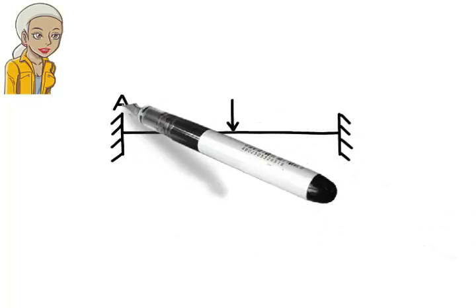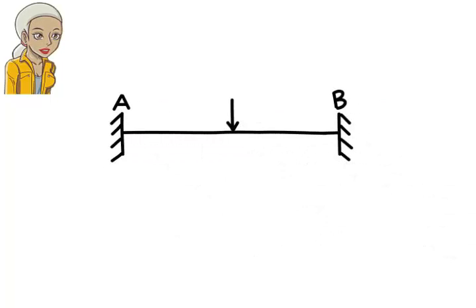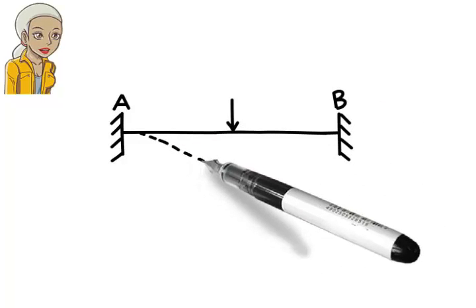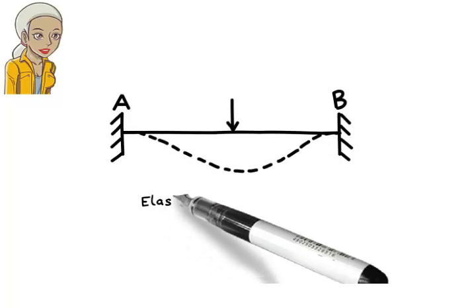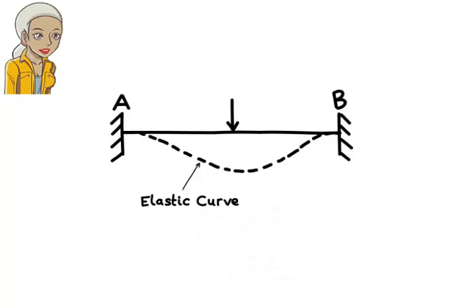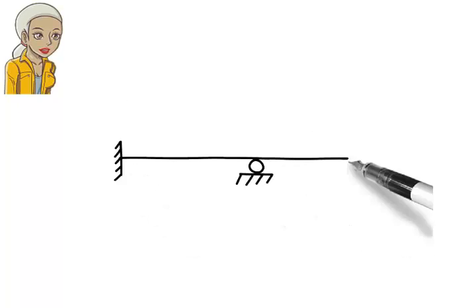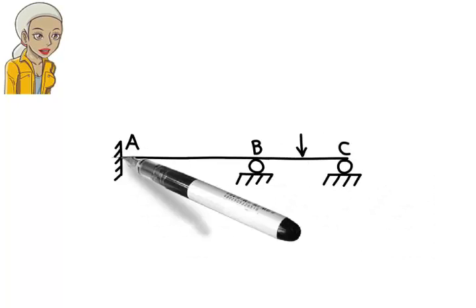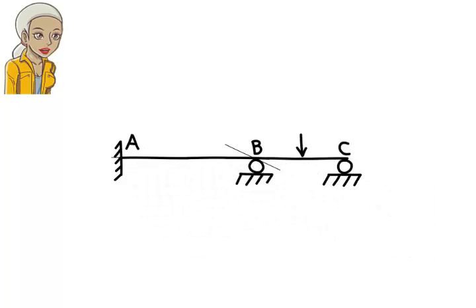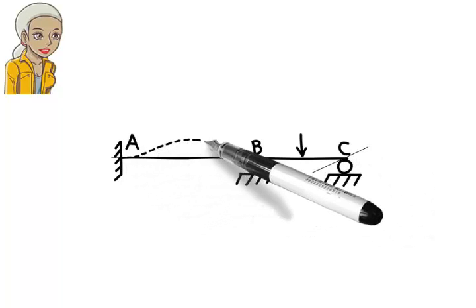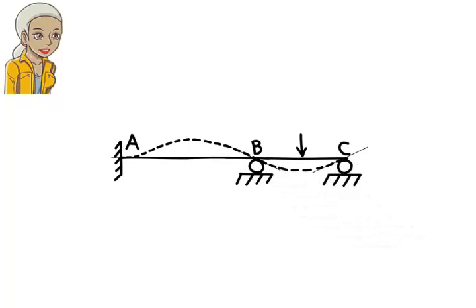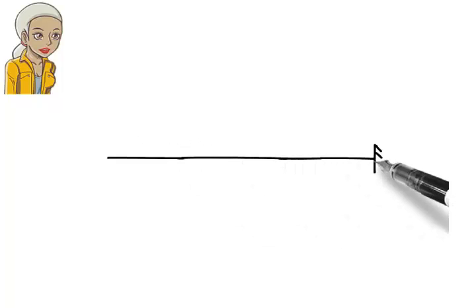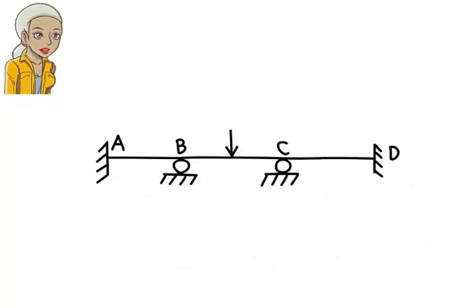This beam deflects downward, but the deflection curve — also called the elastic curve — has a zero slope at A and B. The elastic curve for this beam has a zero slope at A, a negative slope at B, and a positive one at C. So the elastic curve looks like this. Finally, the elastic curve for this beam looks like this.